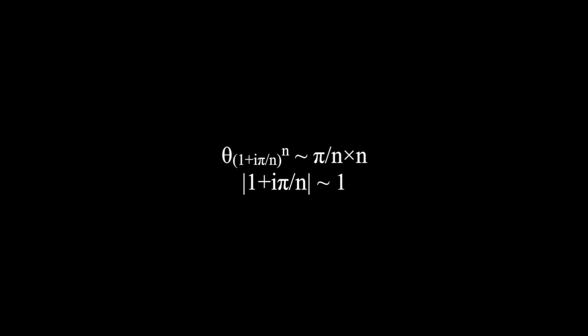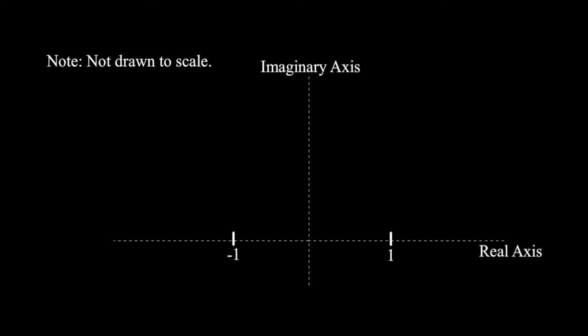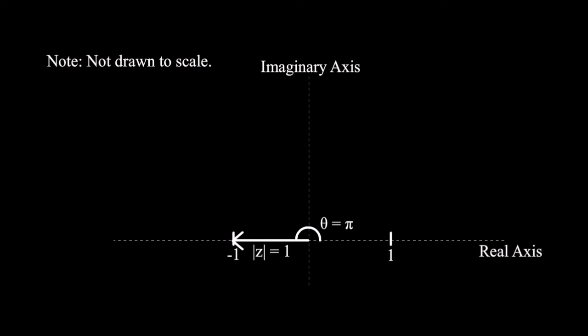Taking this to the nth power means our number will have an angle of pi over n times n, which is pi, but its size will remain 1. And what is this number when plotted on the complex plane? Amazingly, we have concluded that e to the i pi is equal to, indeed, negative 1.